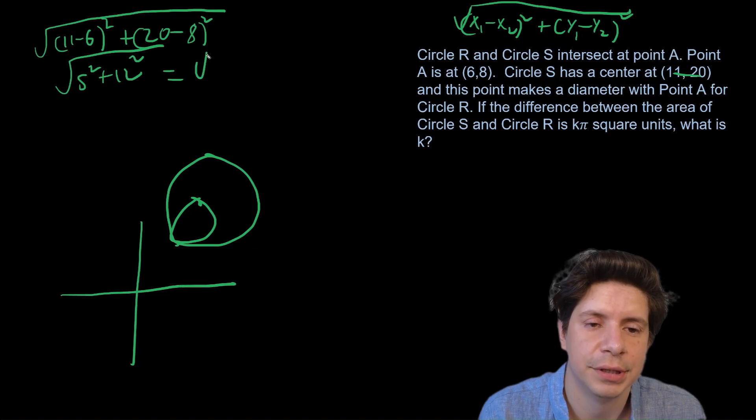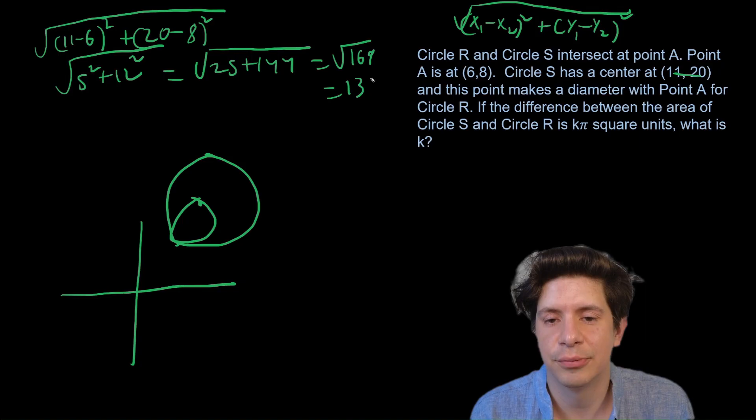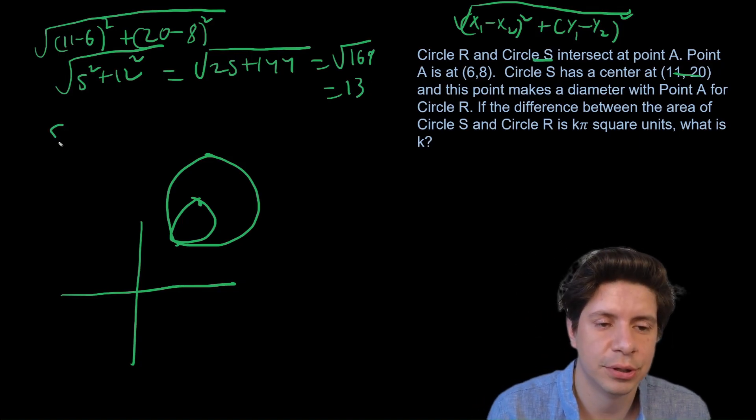That's going to give us 5 squared plus 12 squared. If you know the 5-12-13 triangle, you probably already know what you're going to get. That will be 25 plus 144 which equals root 169 which equals 13. So that is the radius for Circle S.